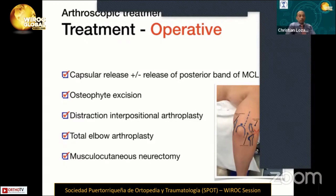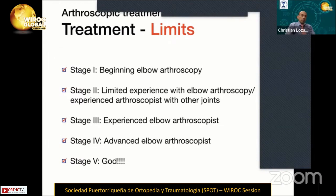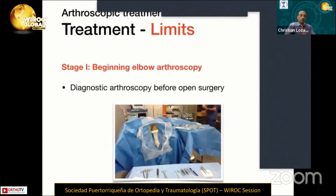For arthroscopic treatment, Felix Awa published guidelines dividing surgical expertise into five stages: Stage 1 is beginning elbow arthroscopy; Stage 2 is limited experience with elbow arthroscopy but experience with other joints; Stage 3 is experienced elbow arthroscopy; Stage 4 is advanced elbow arthroscopy; and Stage 5 is the highest level, which is very difficult to achieve.